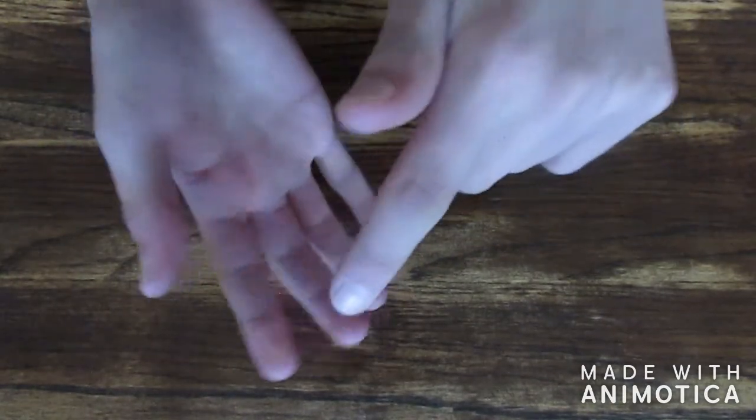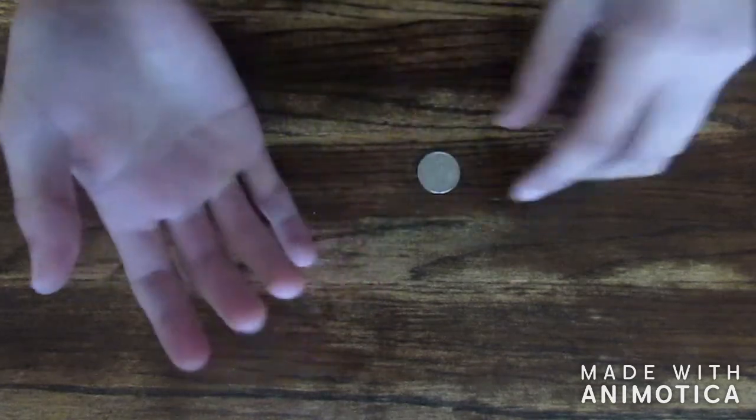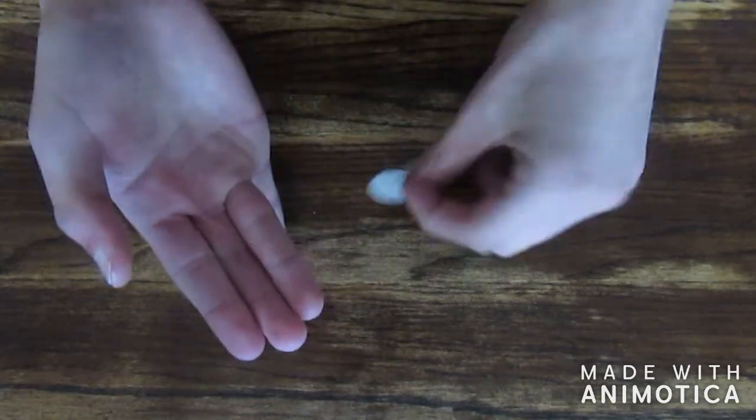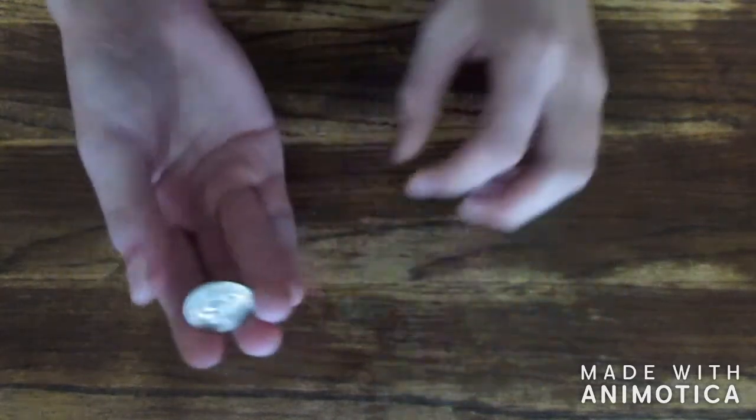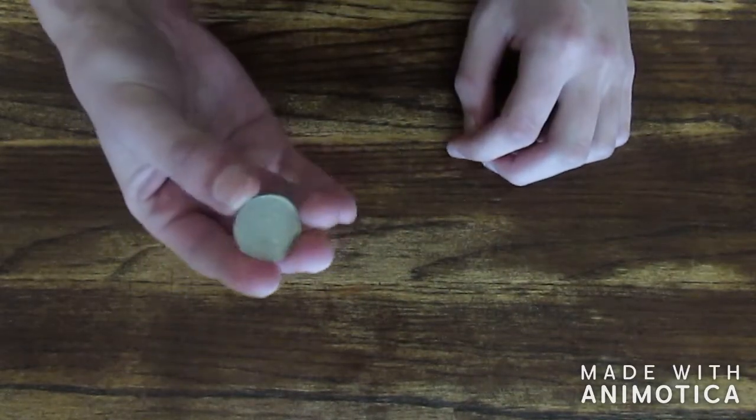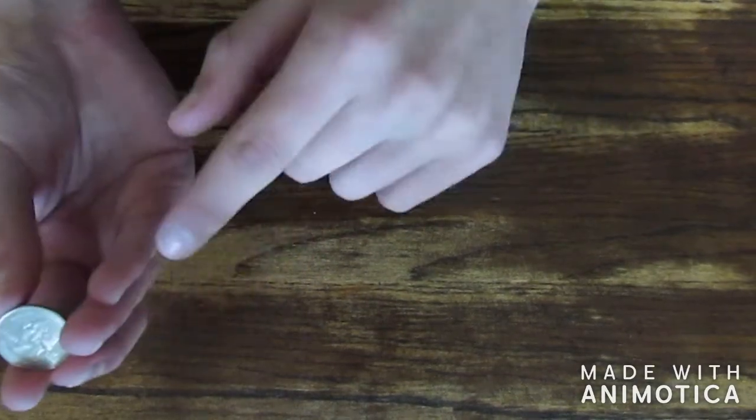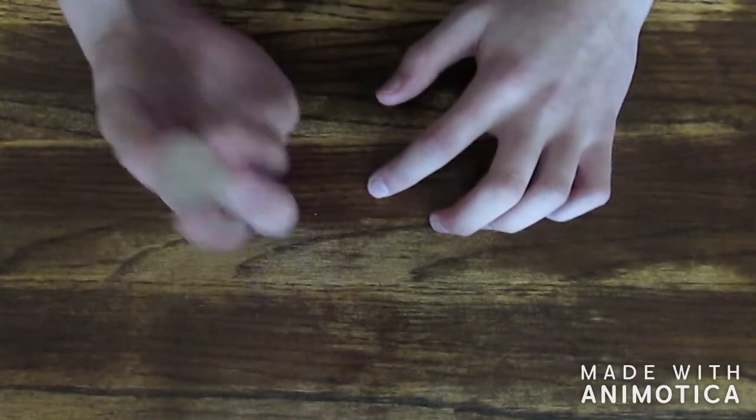You're gonna put the coin and they're gonna kind of wrap around it, and then your thumb is gonna be right here. And your pinky is just gonna be kind of on the side. So you're basically gonna be holding the coin like that.